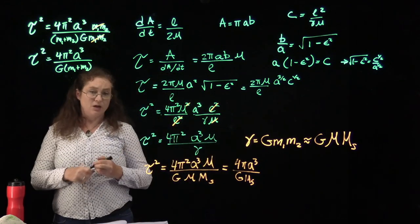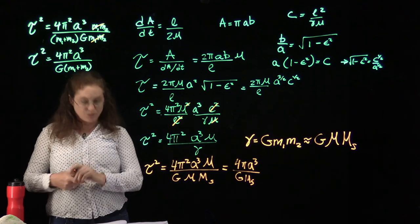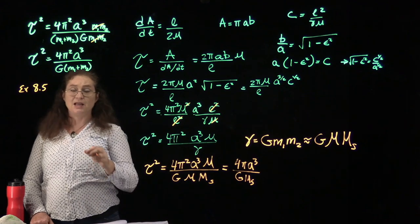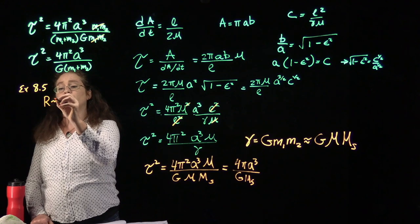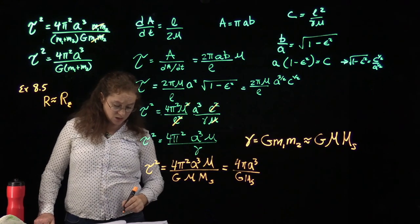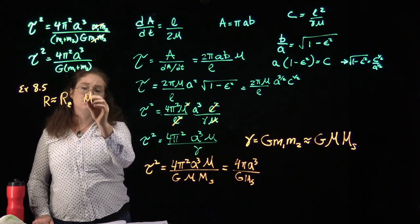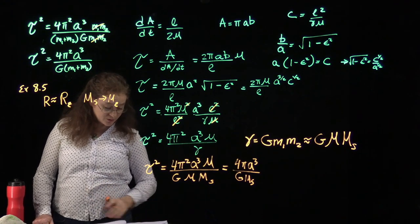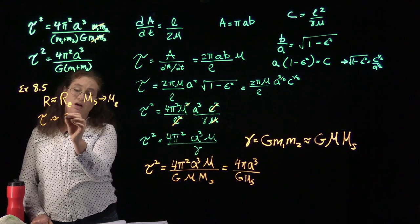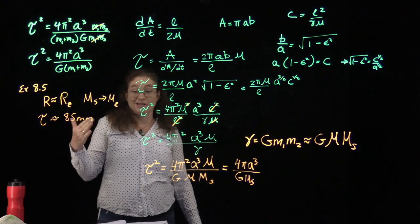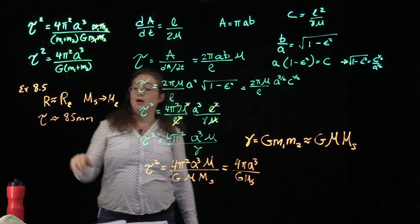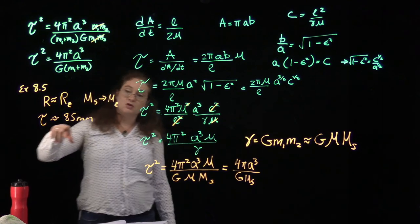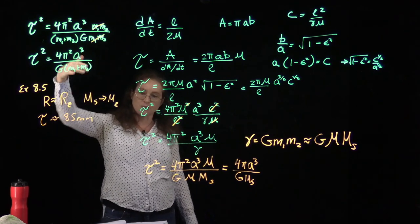Example 8.5: for a low Earth satellite, the orbital radius is approximately equal to the radius of the Earth, and the dominant mass is the mass of the Earth. The period works out to be on the order of 85 minutes. Obviously a satellite can't sit exactly at Earth's surface, but just slightly above — the difference between Earth's radius and the satellite's orbital radius is small, giving slightly larger periods but not by much.